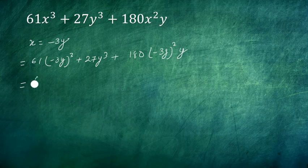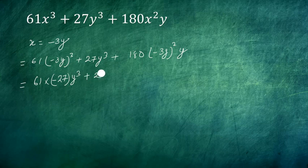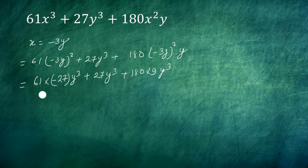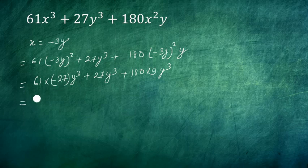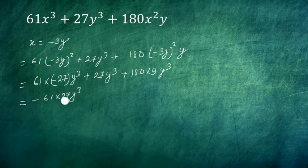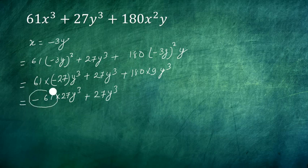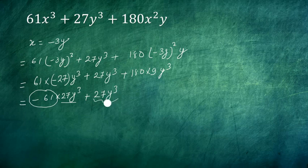Here we are going to be 61 times (-3)³, that is -27y³, plus 27y³, plus 180 times 9y³. Here we are canceling this expression and this expression, negative 61 times 27y³, and we are canceling this expression, 27y³.